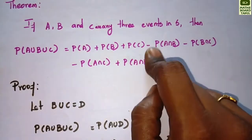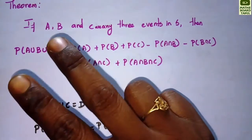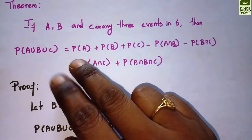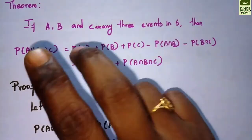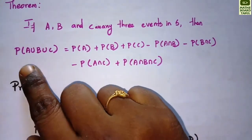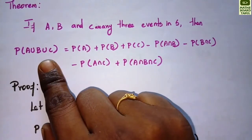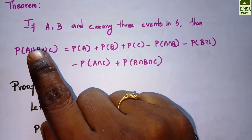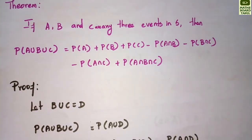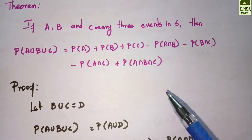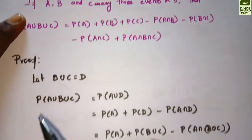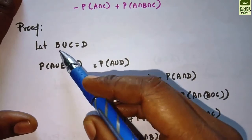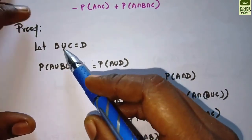We will now prove this formula. In the previous video we handled two events using the formula for probability of A union B. Here we have three events: probability of A union B union C. To prove this, let D equal B union C.